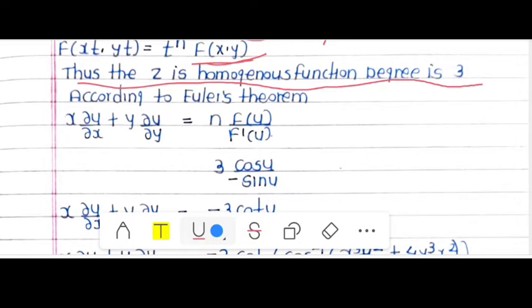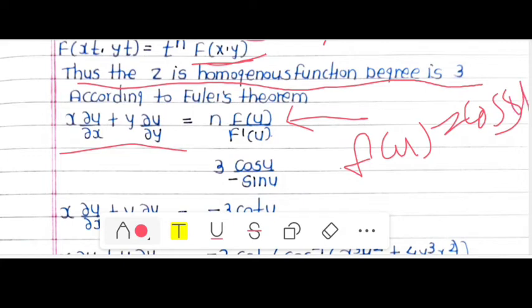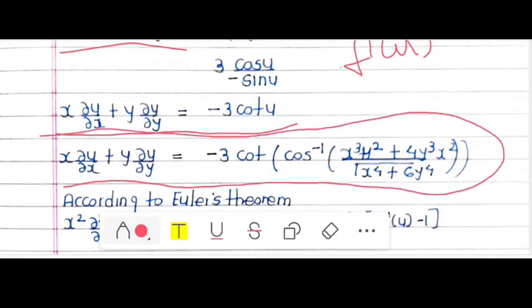From the theorem statement, x·(∂u/∂x) + y·(∂u/∂y) = n·f(u) / f'(u). Here f(u) = cos(u) and its derivative f'(u) = −sin(u), with n = 3. Substituting, we get −3 cot(u). Therefore, x·(∂u/∂x) + y·(∂u/∂y) = −3 cot(cos⁻¹((x³y² + 4y³x²) / √(x⁴ + 6y⁴))).